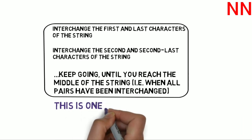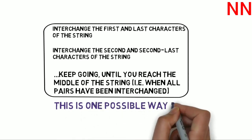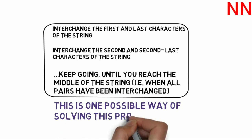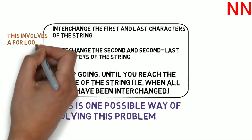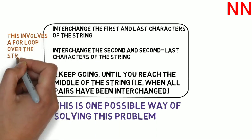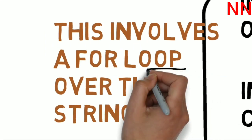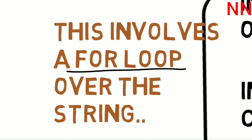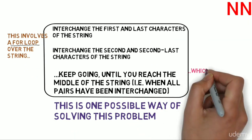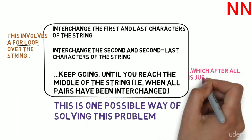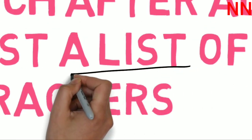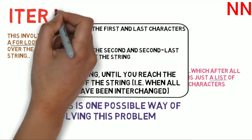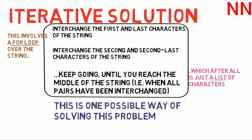This is one possible way of solving this problem. We'd probably use a for loop to iterate over the string, and for every iteration of the loop we'd perform one exchange. A string is simply a list of characters, so what we are doing is iterating over the list of characters and performing these swaps. This is an iterative solution to this problem — we've solved the reverse string function using an iterative approach.